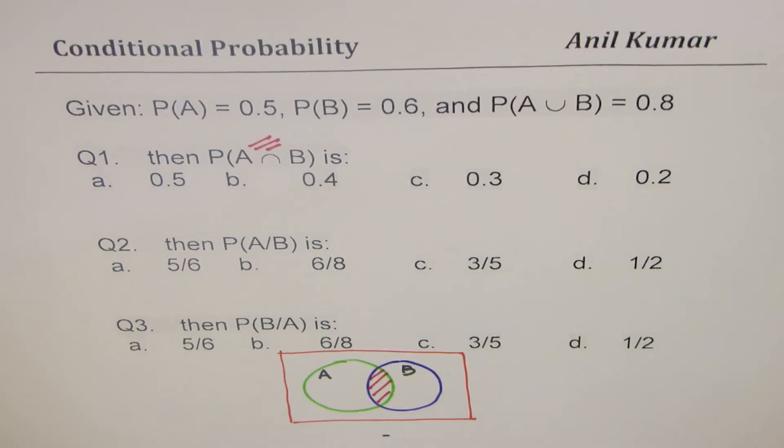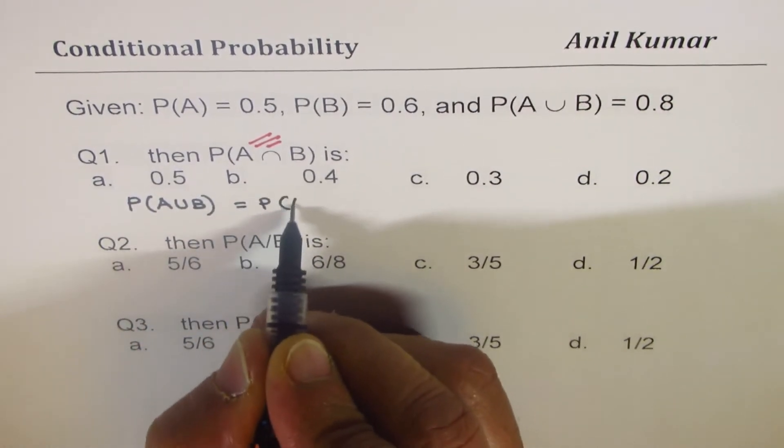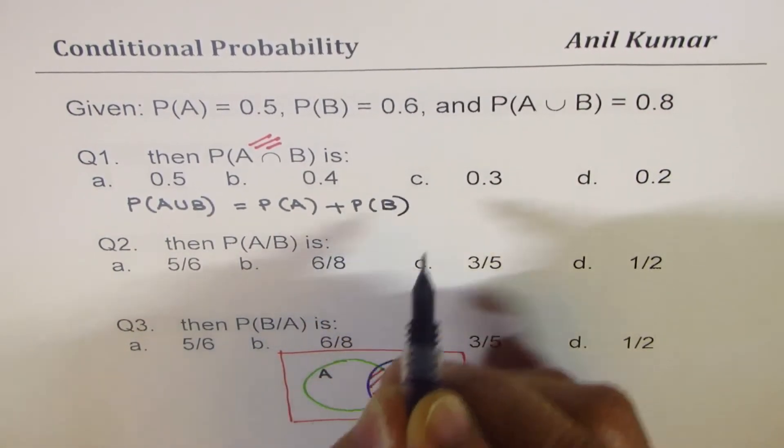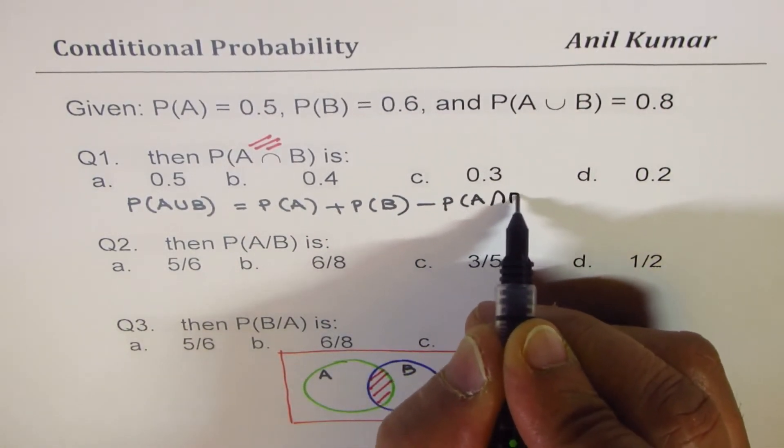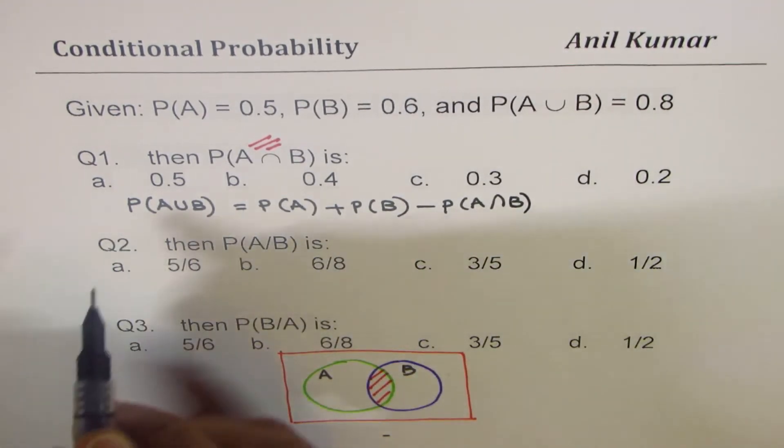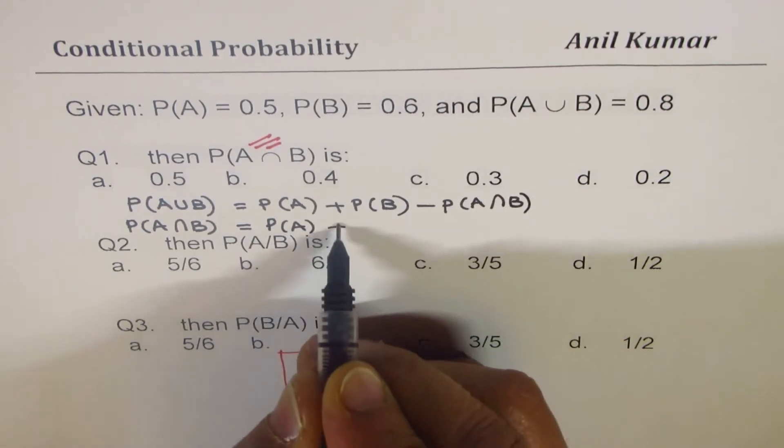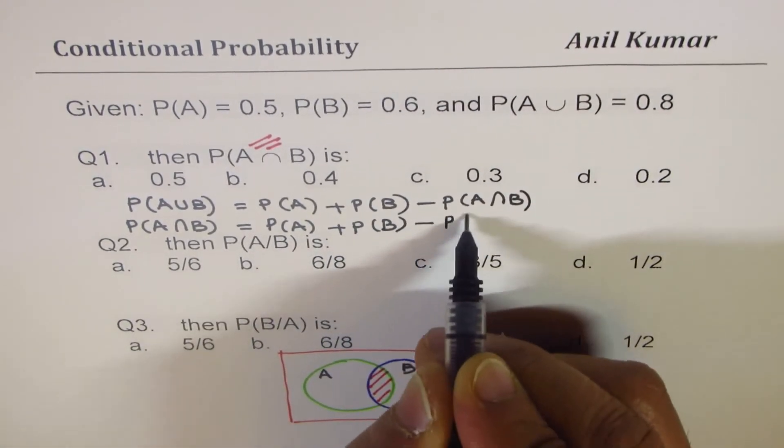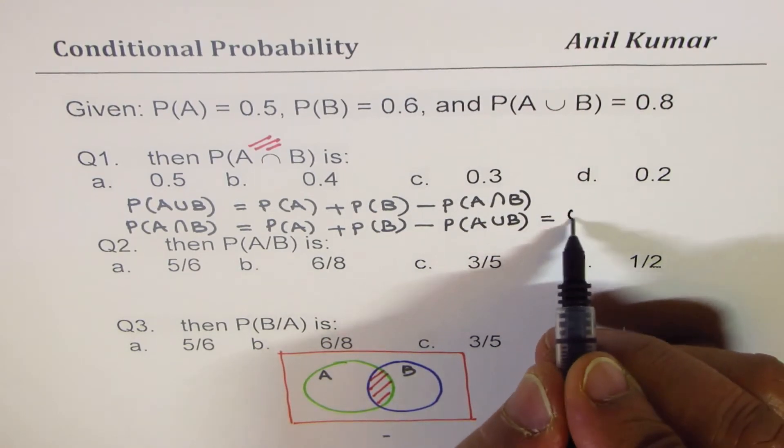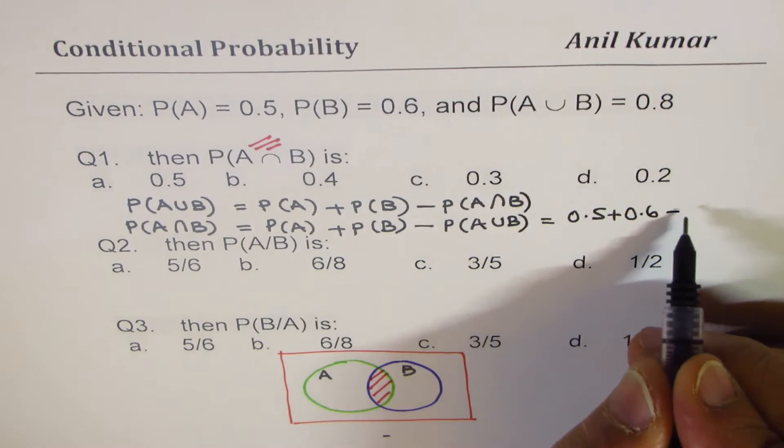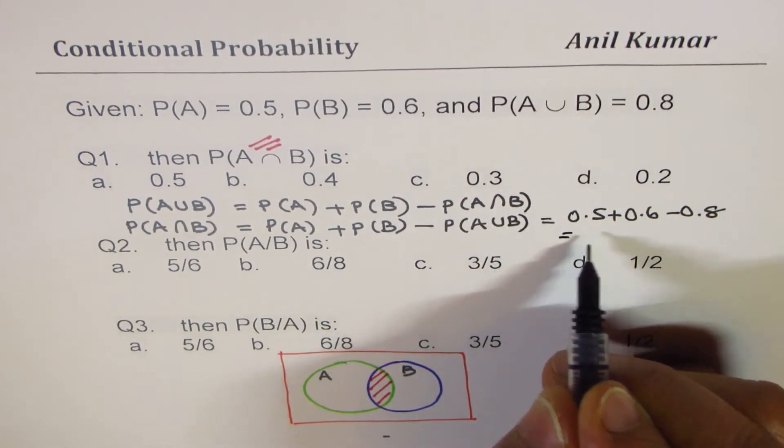So mathematically you can always write this probability of A union B as probability of A plus probability of B minus probability of A intersection B. So probability of A intersection B is equal to probability of A plus probability of B minus probability of A union B. So from the given values we can say this is equal to 0.5 plus 0.6 minus 0.8, and that is 1.1 minus 0.8 gives us a value which is 0.3.